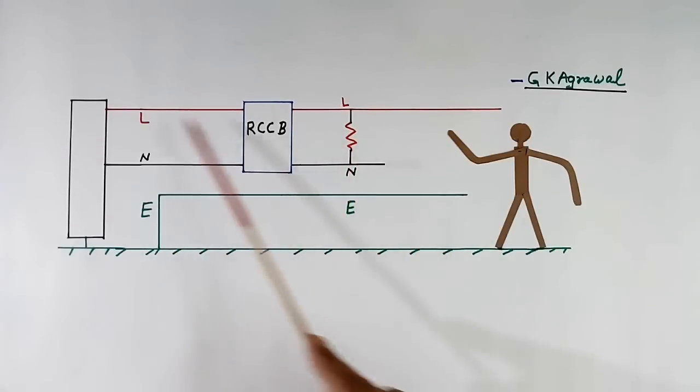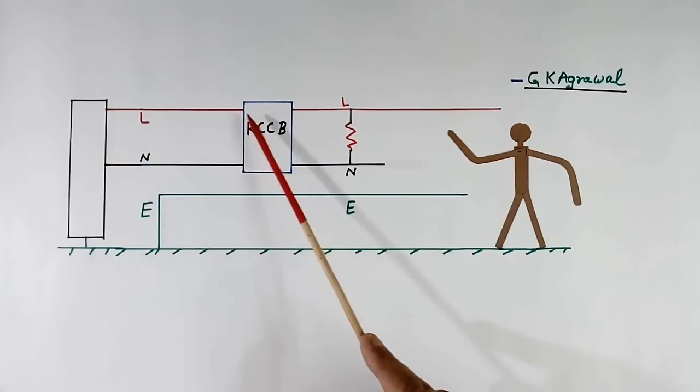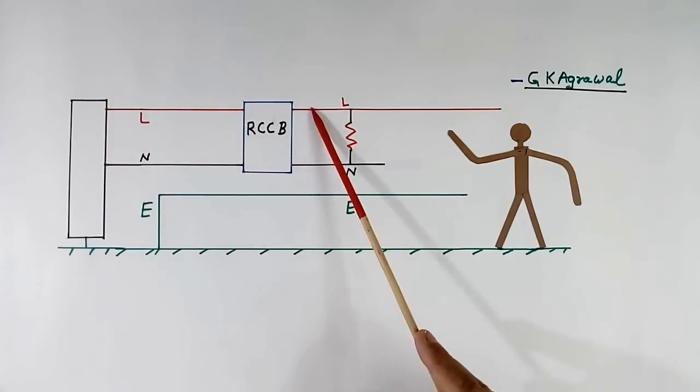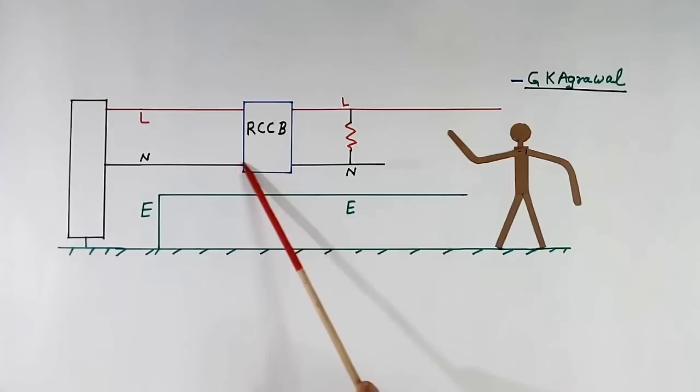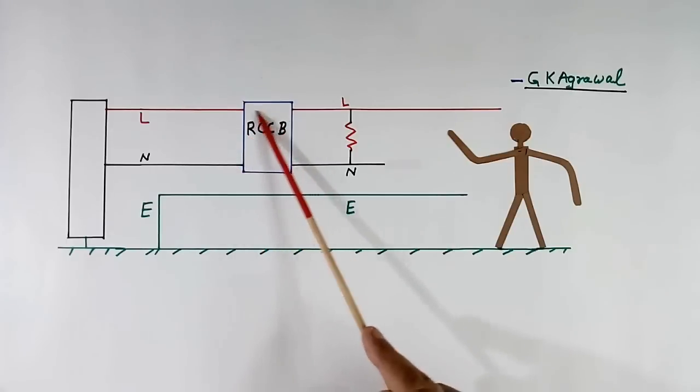In the normal load, current flows like this. And whatever current is going through line, same current is coming back through neutral, and RCCB will work.